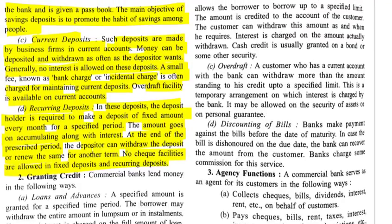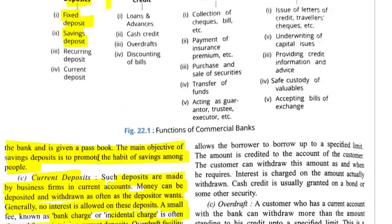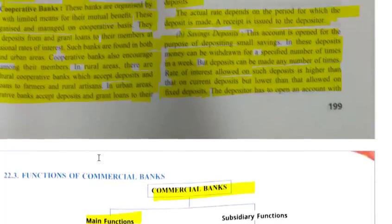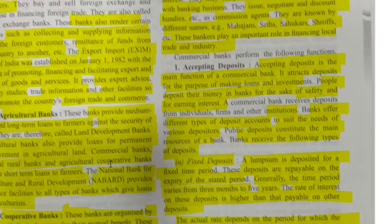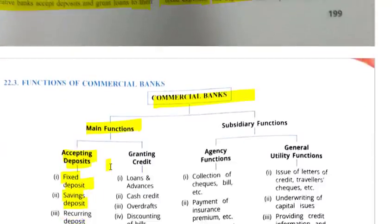To summarize the first function of commercial banks — accepting deposits — banks accept deposits in four ways: fixed deposit, saving deposit, current deposit, and recurring deposit.